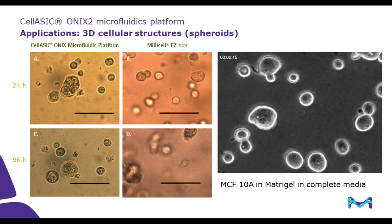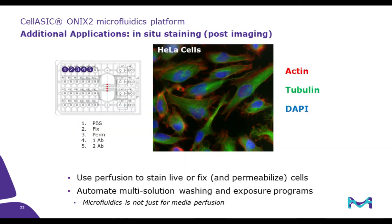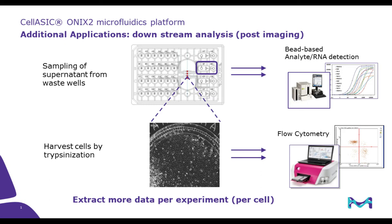This can also be used for non-live cell imaging applications. After live cell imaging, cells in the microchamber can be in-situ stained. The image in the middle shows HeLa cells that were stained after live cell imaging experiments using CellASIC as an automated staining platform. In addition to in-situ staining, cells or their lysates can be extracted for further downstream analysis such as flow cytometry, PCR, and sequencing applications.